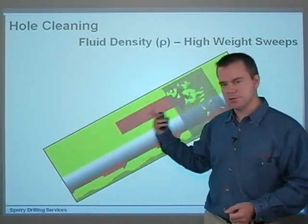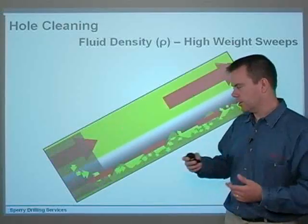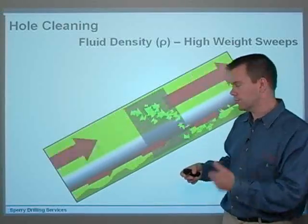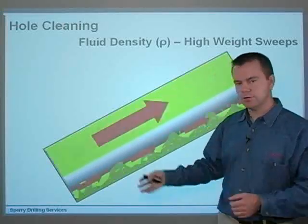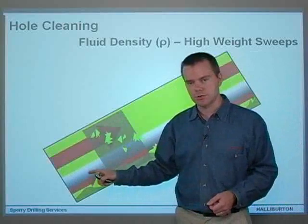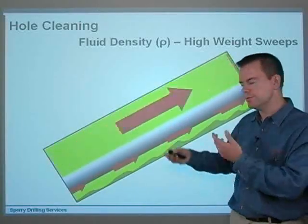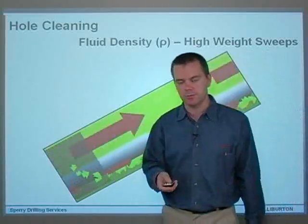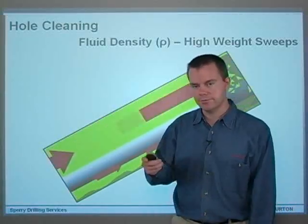So high density sweeps are good to use as a secondary tool while you're maintaining a high enough flow rate normally while drilling, just to ensure that you've got all this stuff out. But if you've got a hole cleaning problem, be very wary about using that as a primary attack. Use it as a secondary tool, use it for bottoms up and so on, but don't use it as a primary means of getting cuttings out of a wellbore. Use flow rate.